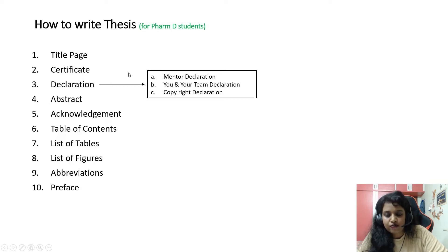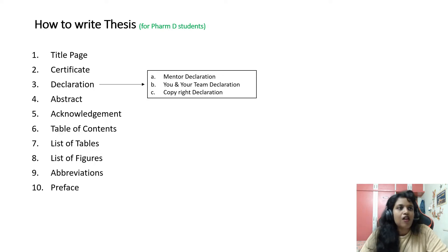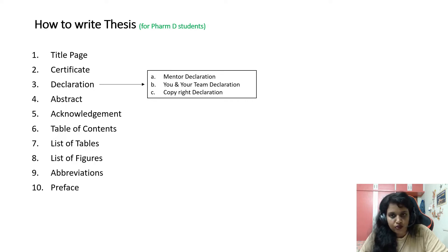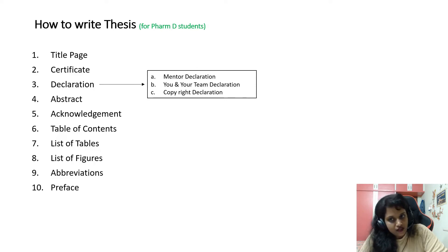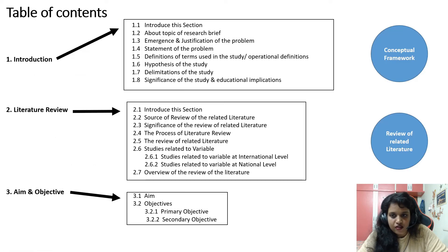These 10 components form the general structure any thesis will have. This video is made specifically for pharmacy students — Pharm D students do 95% pharmacotherapeutics-related projects, while B.Pharm and M.Pharm students may do analytical or pharmacology-based projects. The framework in the table of contents may vary slightly, but both are mostly similar.